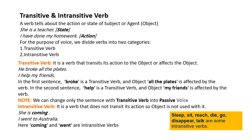Intransitive verb وہ ہوتا ہے جس کو object کی ضرورت نہیں ہوتی۔ For example: 'She is coming' — 'come' ایک intransitive verb ہے اور یہ جملہ مکمل معنی دیتا ہے بغیر object کے۔ اس طرح کے بہت سارے verbs ہیں: sleep, sit, reach, die, go, disappear, talk وغیرہ — یہ سب intransitive verbs ہیں۔ یاد رکھیں کہ intransitive verb passive voice میں change نہیں ہوتا، صرف transitive verb والے جملے passive میں change ہوتے ہیں۔